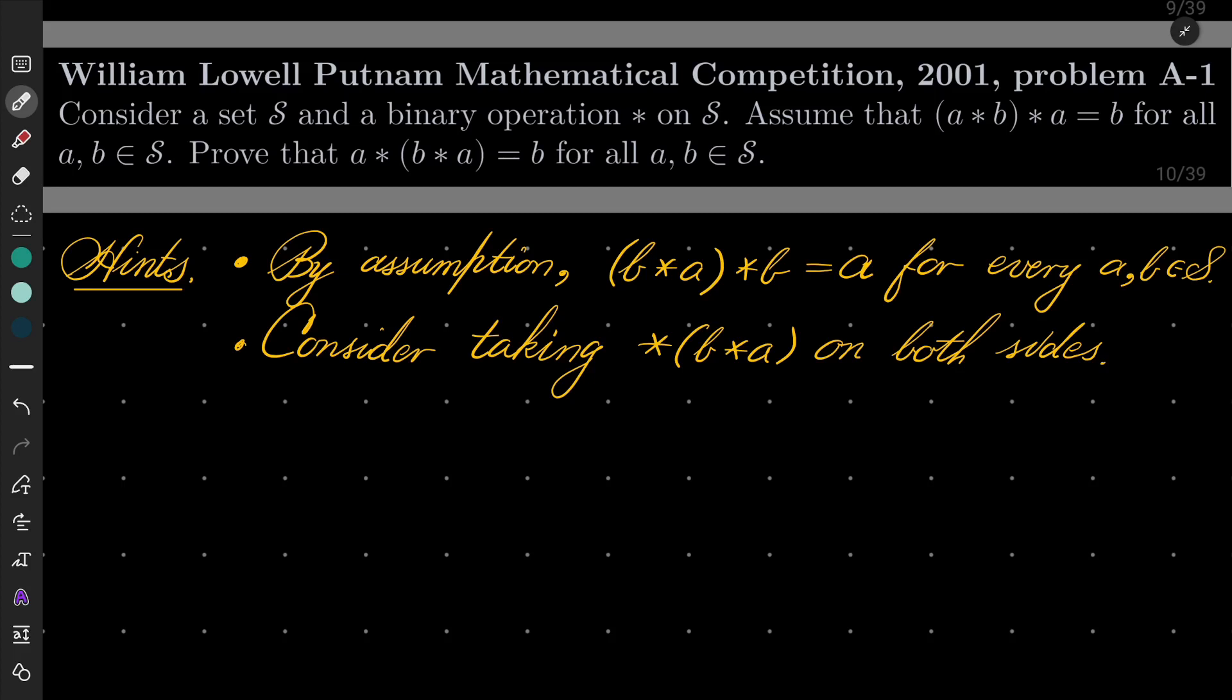We wish to prove that a star (b star a) equals b for all a, b in our set. So in other words we can move the parentheses. It's not to say that it's associative, but in this case for a b a we can move the parentheses to get the same result b.